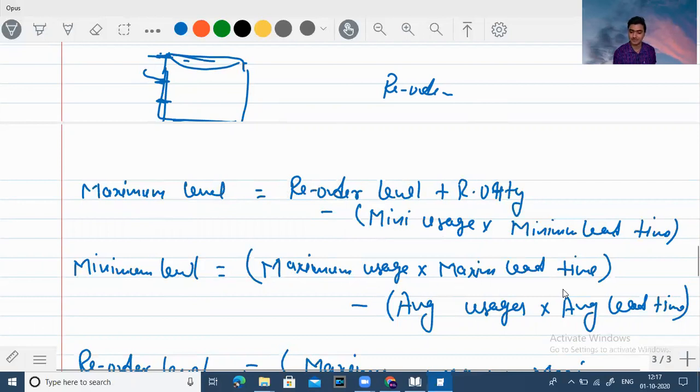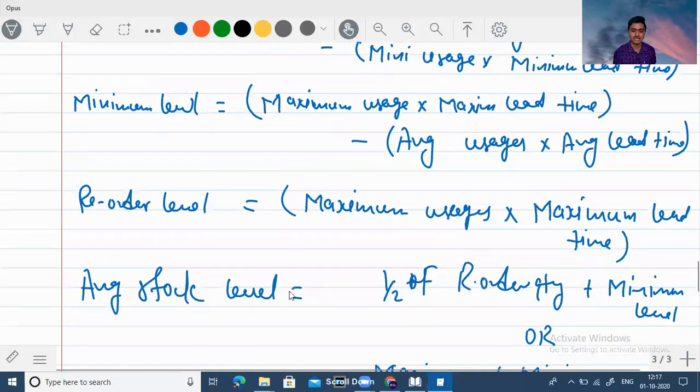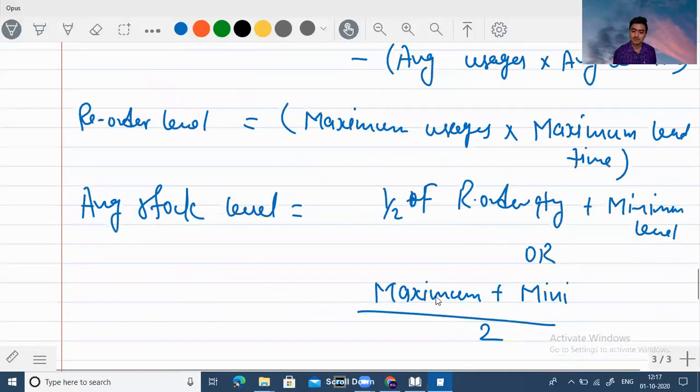Minimum level, maximum usage into maximum lead time. Reorder quantity plus minimum level or maximum level plus minimum level divided by 2, this is the formula.